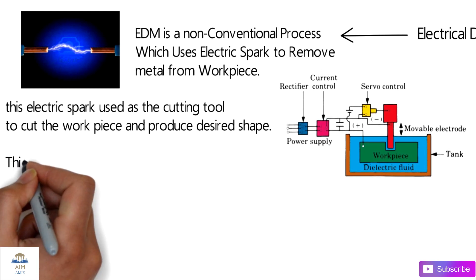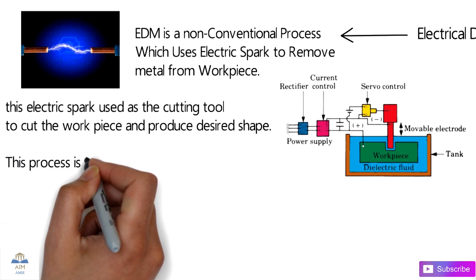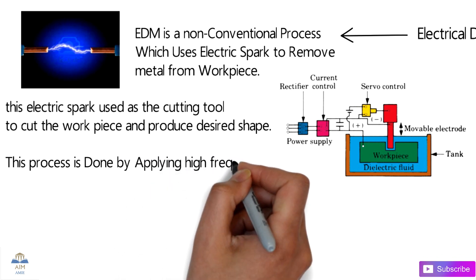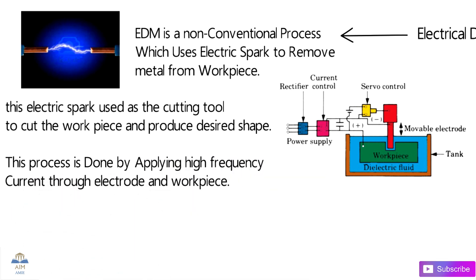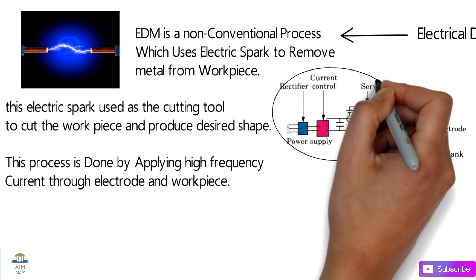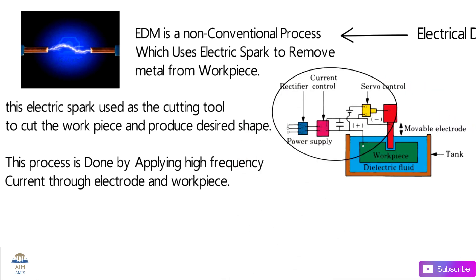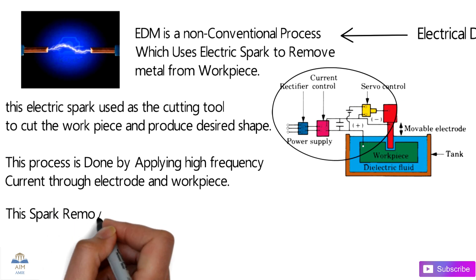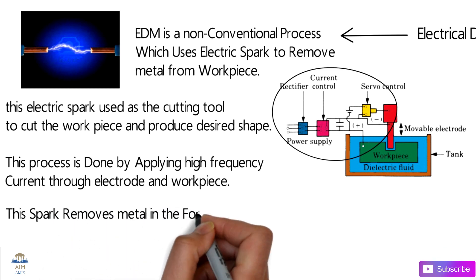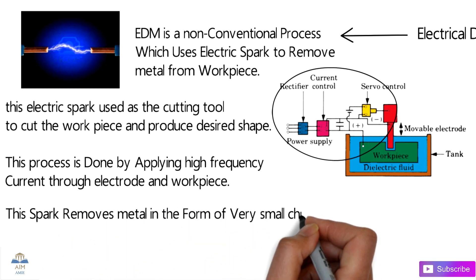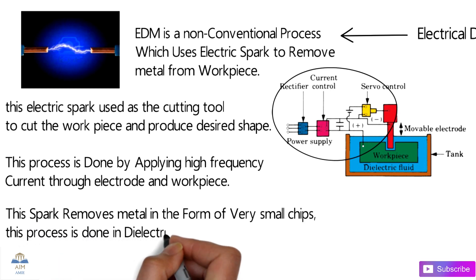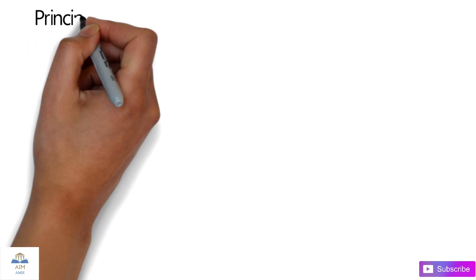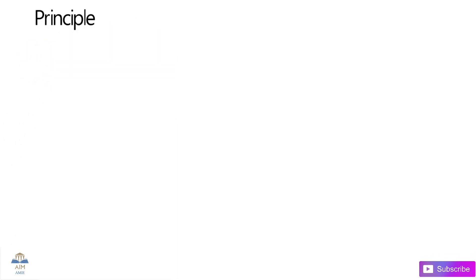This is the line diagram representation of the EDM process. The process is done by applying high-frequency current through the electrode and workpiece — the current is supplied by the power supply. The spark removes the metal in the form of very small chips, which we can call microchips. This process is done in dielectric fluid; both tool and workpiece are immersed in the dielectric fluid.